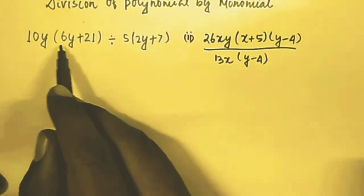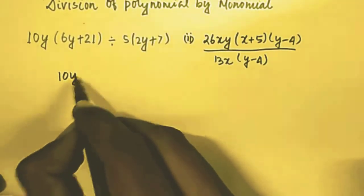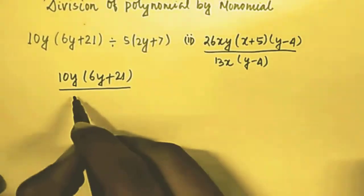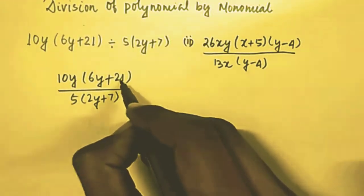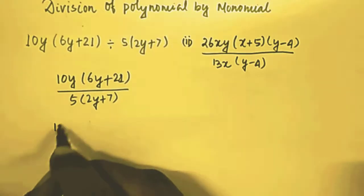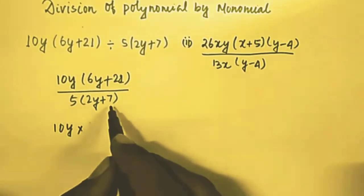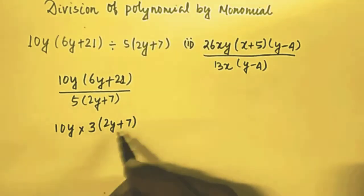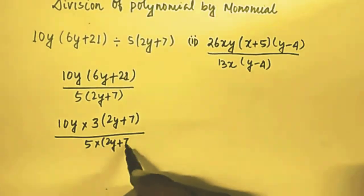Here we have 10y multiplied by (6y + 21) divided by 5(2y + 7). We look for what is common in the two terms. In (6y + 21), the number 3 is common, so we take out 3 and the remaining part is (2y + 7). So the expression becomes 10y × 3(2y + 7) divided by 5 × (2y + 7).